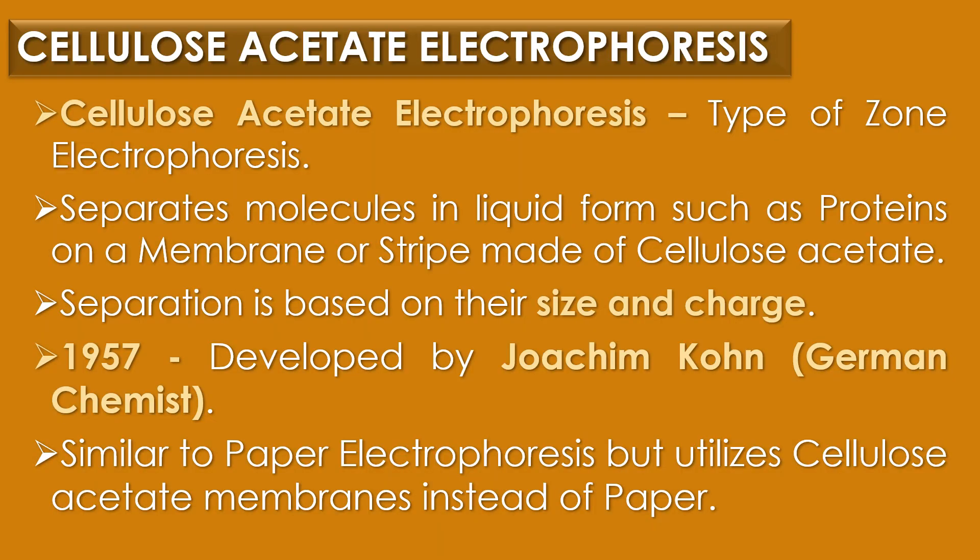Cellulose acetate electrophoresis is a type of zone electrophoresis that separates molecules in liquid form, such as proteins, on a membrane or strip made of cellulose acetate. The separation is purely based on their size and charge. It was first developed by German chemist Joachim Kohn in the year 1957.